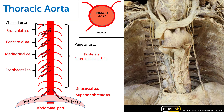We've discussed the course of the thoracic aorta, as well as the specific course of the thoracic part of the descending aorta, and the branches — both visceral and parietal — of the thoracic part of the descending aorta. This is your summary slide. Thank you for your time.